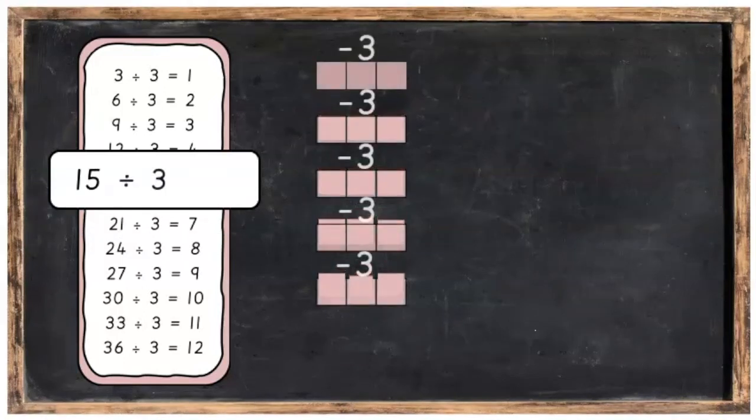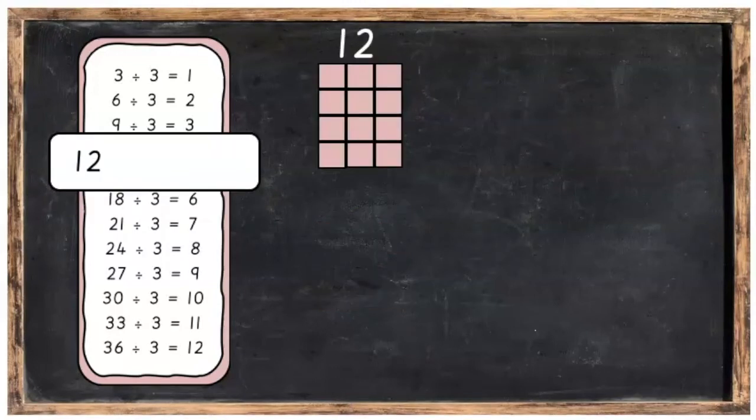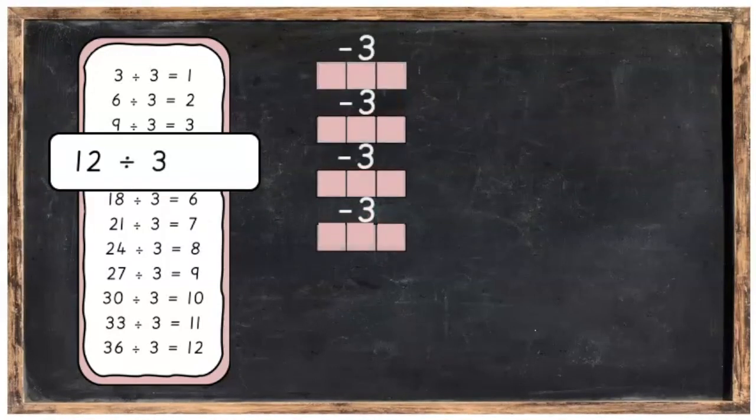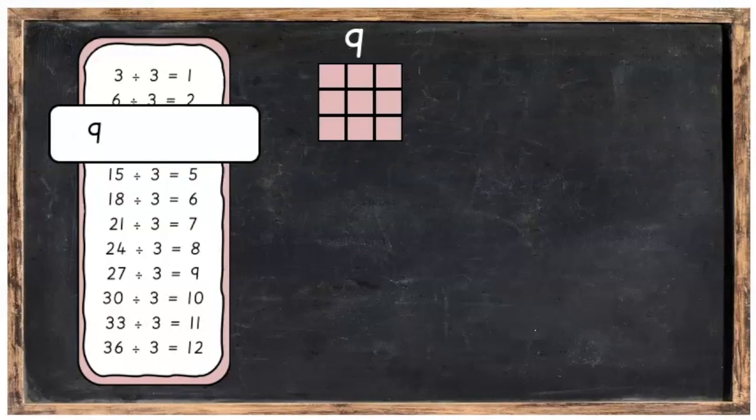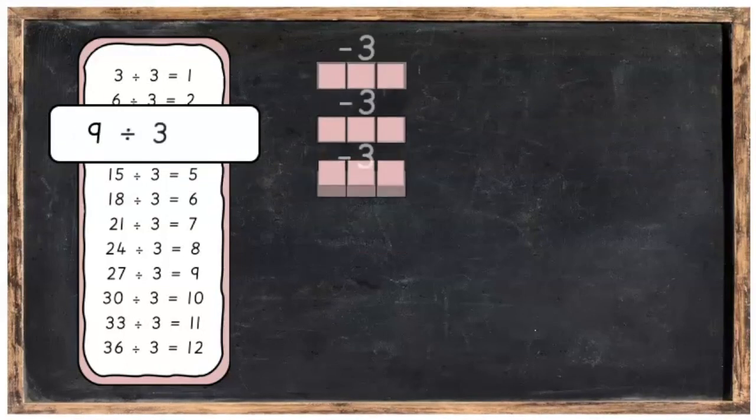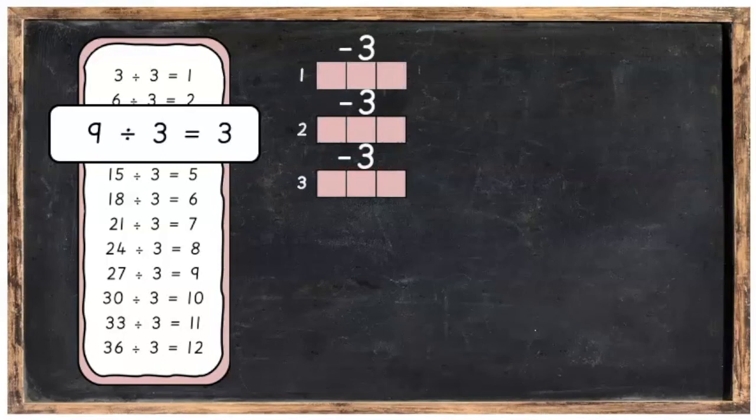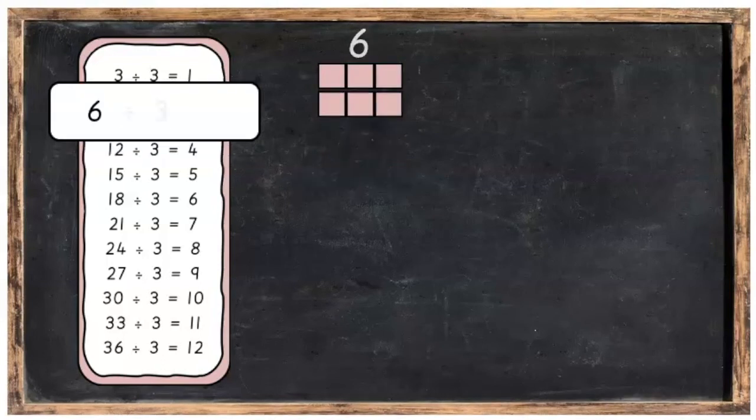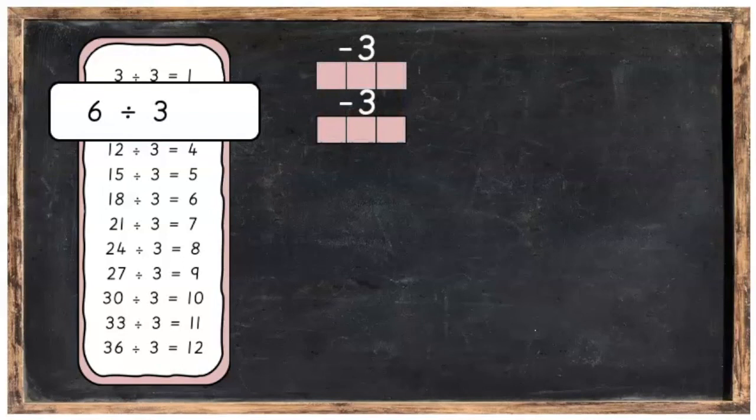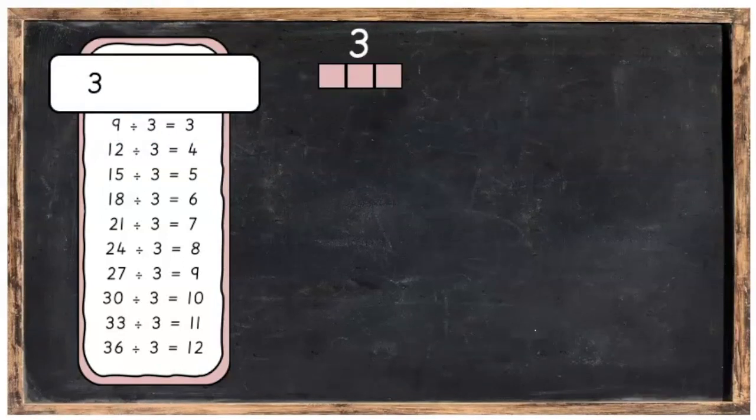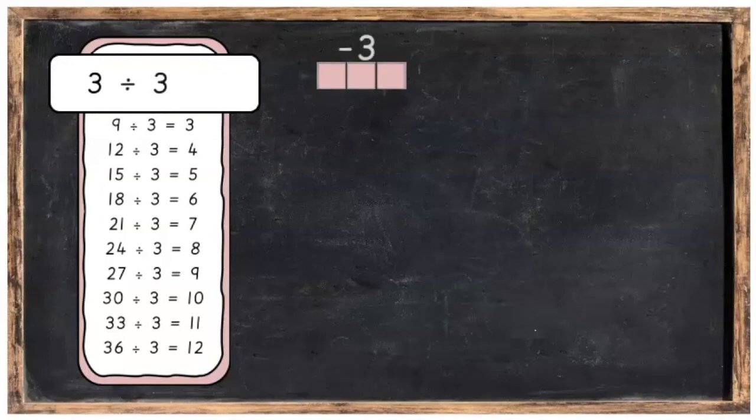Another way of saying it is 15 divided into 3 will give you 5. 12 divided by 3 is 4. I can take away the number 3 from 9, 3 times. If I have the number 6, I can take away the number 3, 2 times. And finally, if I have the number 3, I can take away 3 just 1 time.